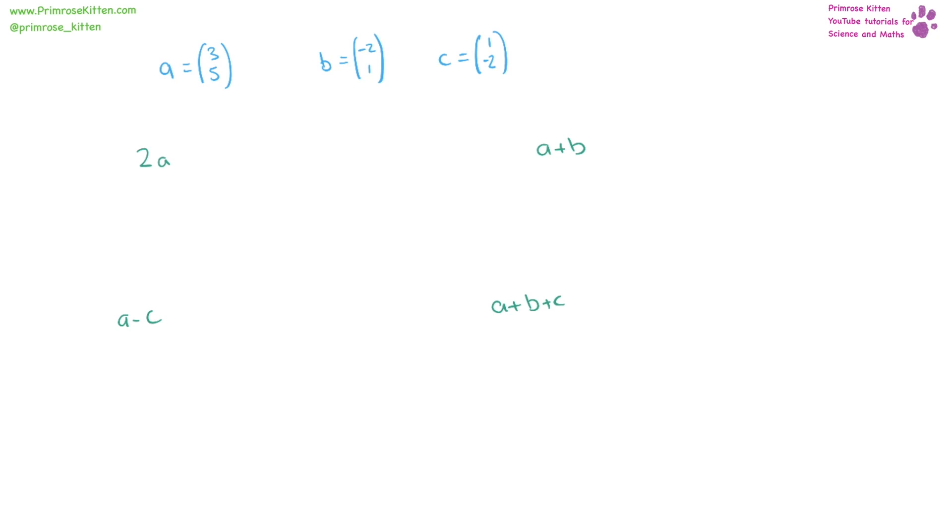Vectors freak a lot of people out, but they are lovely, I promise you. So here we have our three vectors, a, b, and c. When we're looking at vectors, we can write them like this, movement in x, movement in y.